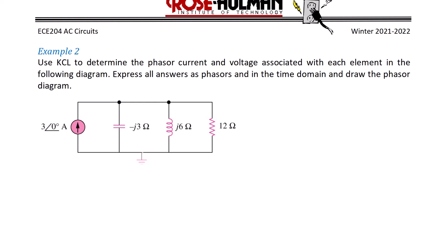I would like to use KCL to determine the phasor current and voltage associated with each element in the following diagram. Express all answers as phasors in the time domain and then draw the phasor diagram.